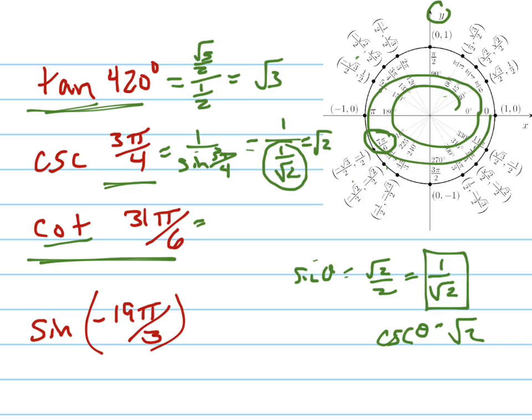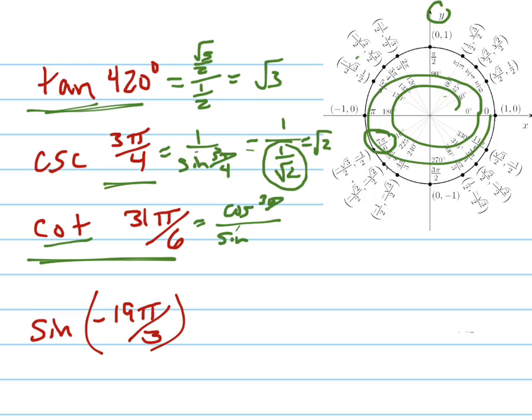The cotangent is equal to the cosine over the sine. Cosine over sine of 31π over 6. The cosine is the x value. So it's negative 1 half divided by, I did that wrong. The x value is the cosine. So the cosine is negative root 3 over 2. And the sine is negative 1 half. And multiplying by the reciprocal, the negative divided by negative is a positive. The 2's cancel out. And you get just a square root of 3.